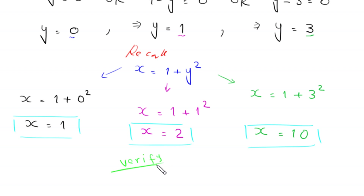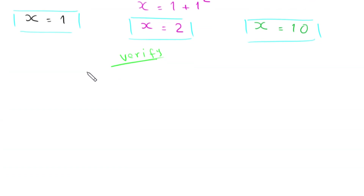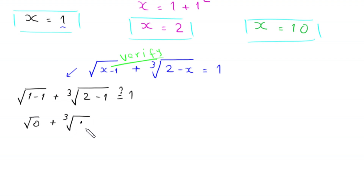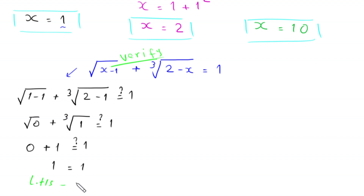We now verify these values. The original equation is square root of x minus 1 plus cube root of 2 minus x is equal to 1. When x equals 1, this becomes square root of 0 plus cube root of 1, which is 0 plus 1 equals 1. The left hand side equals the right hand side, so x equals 1 is a valid solution.